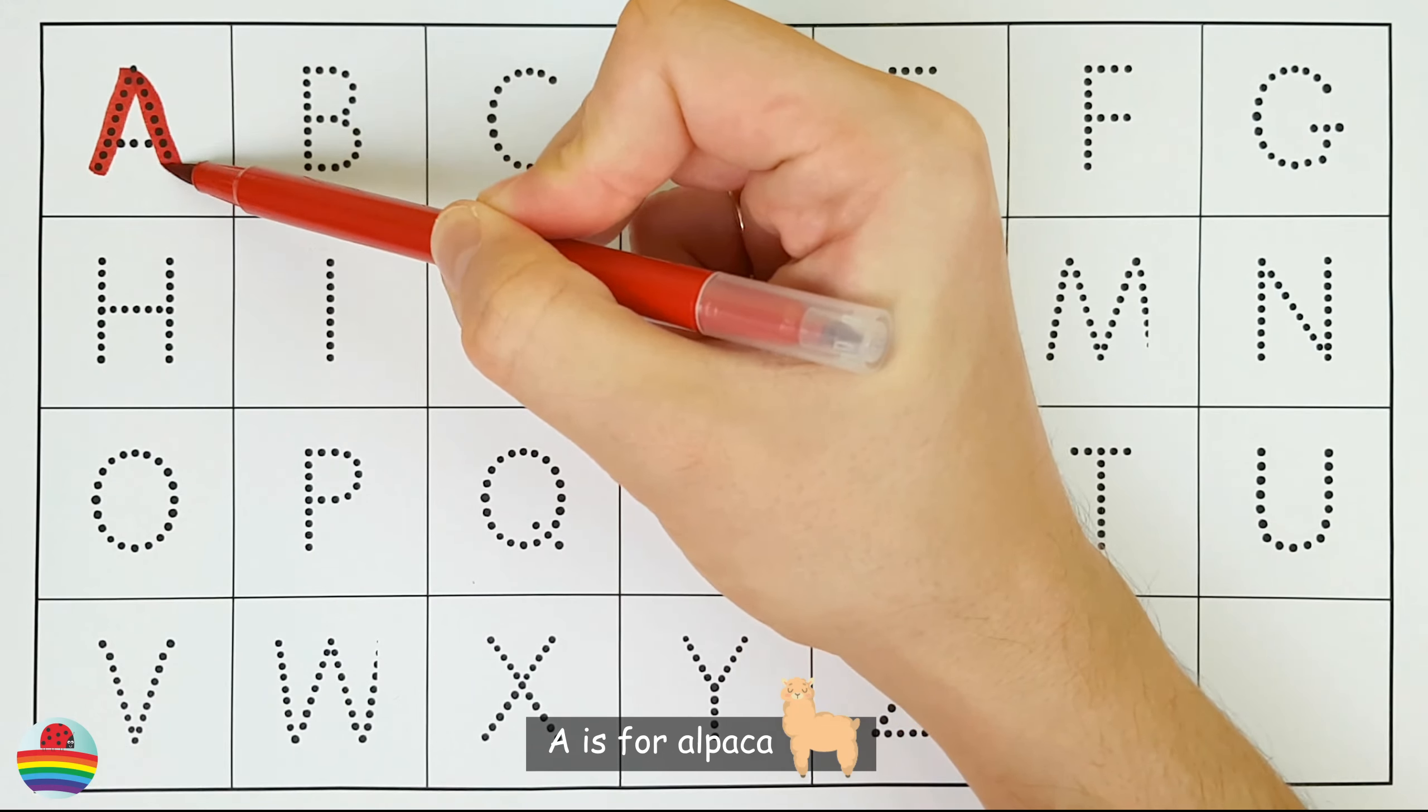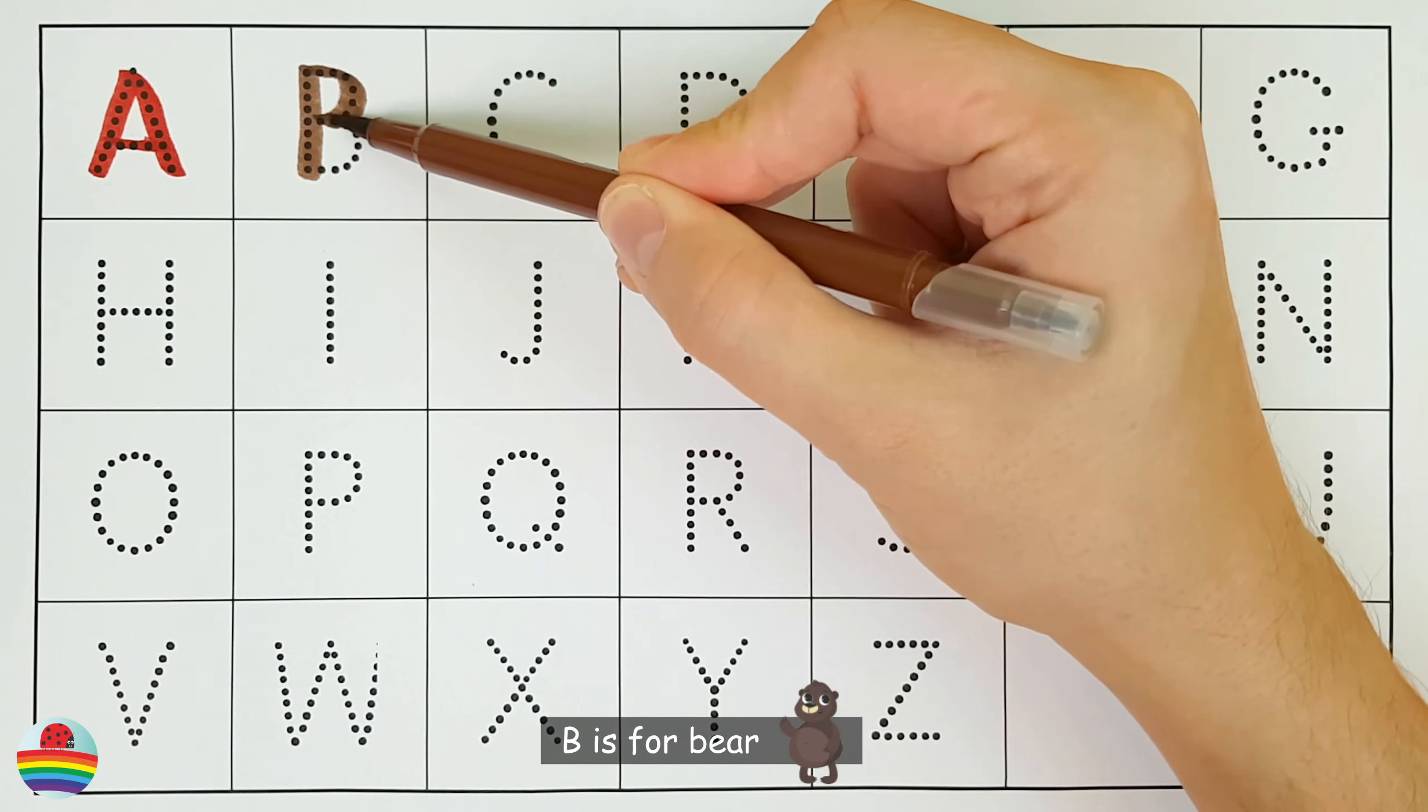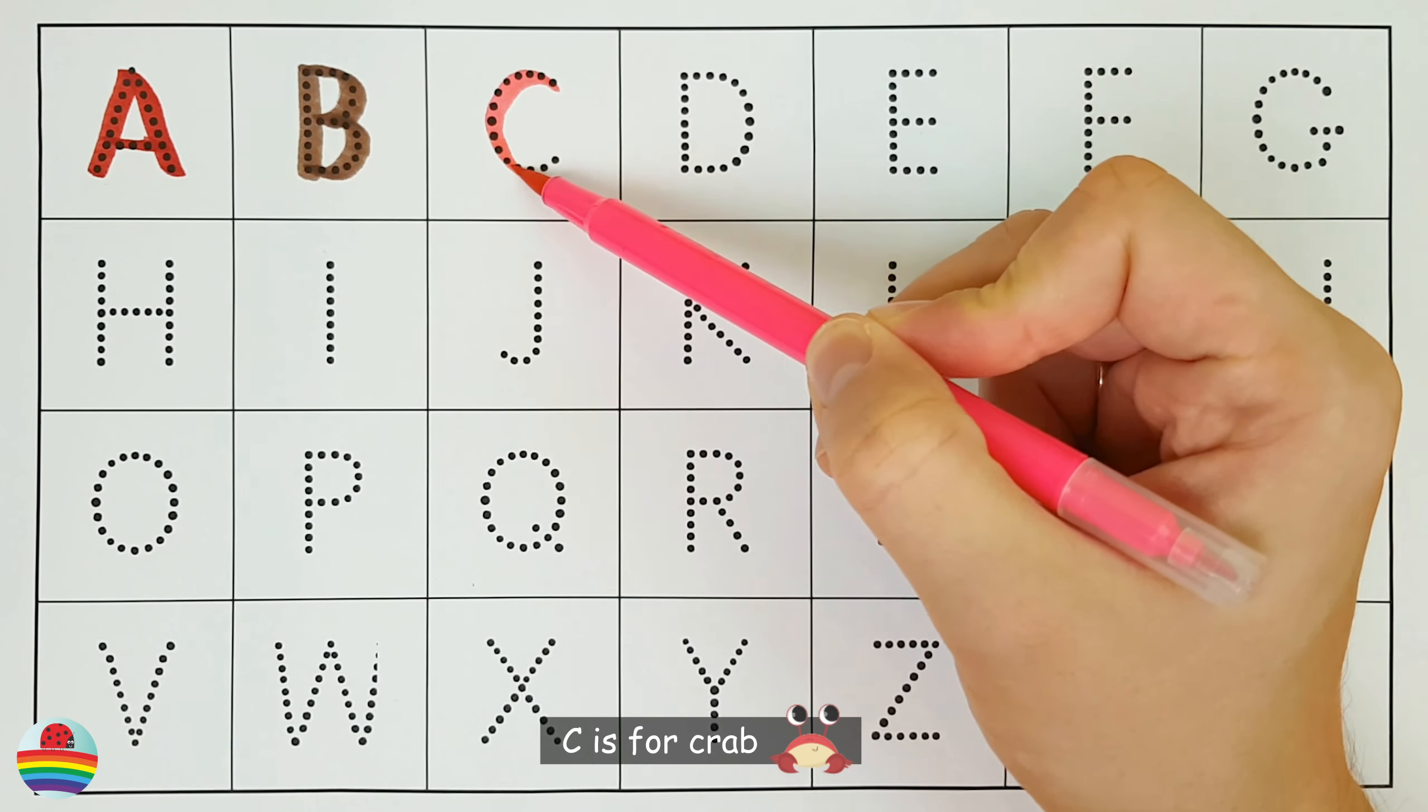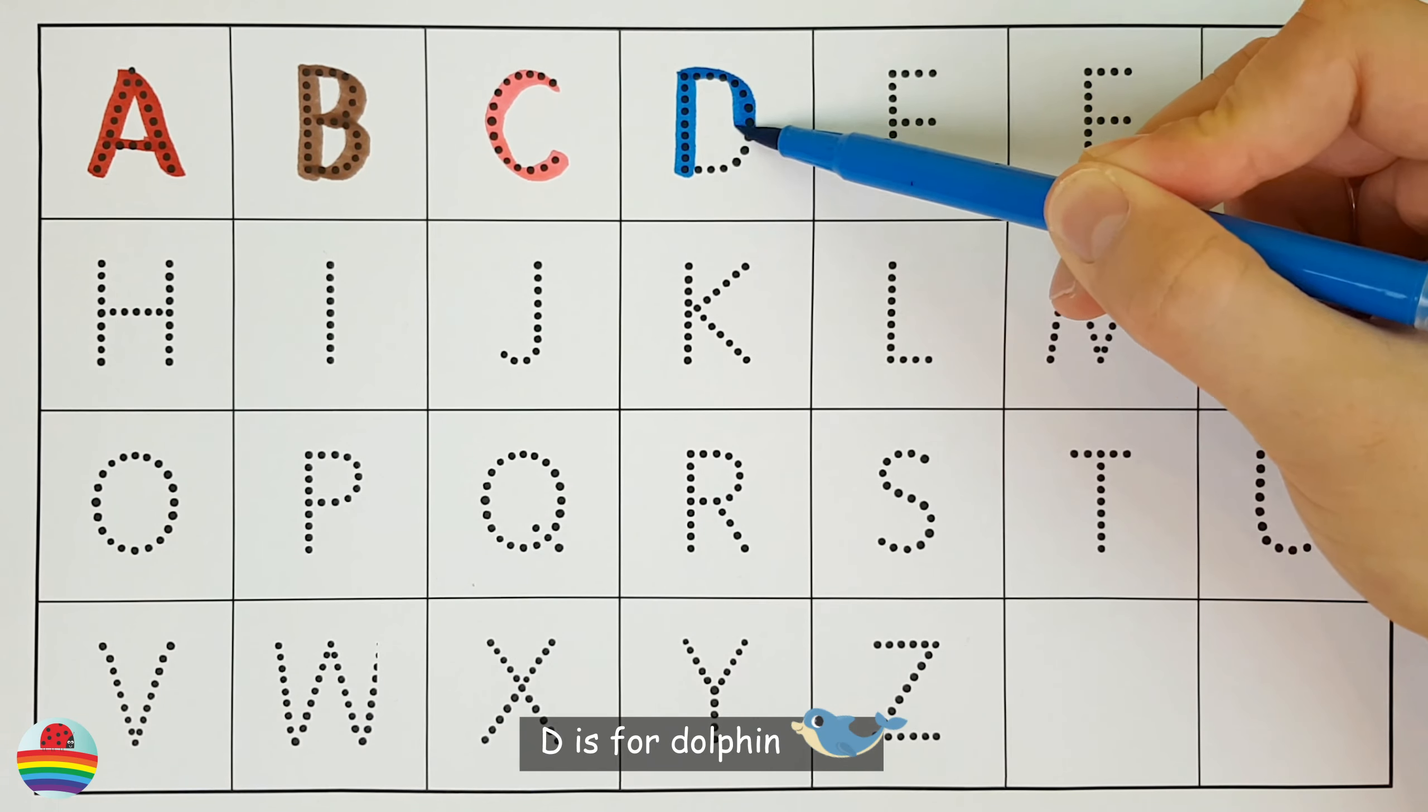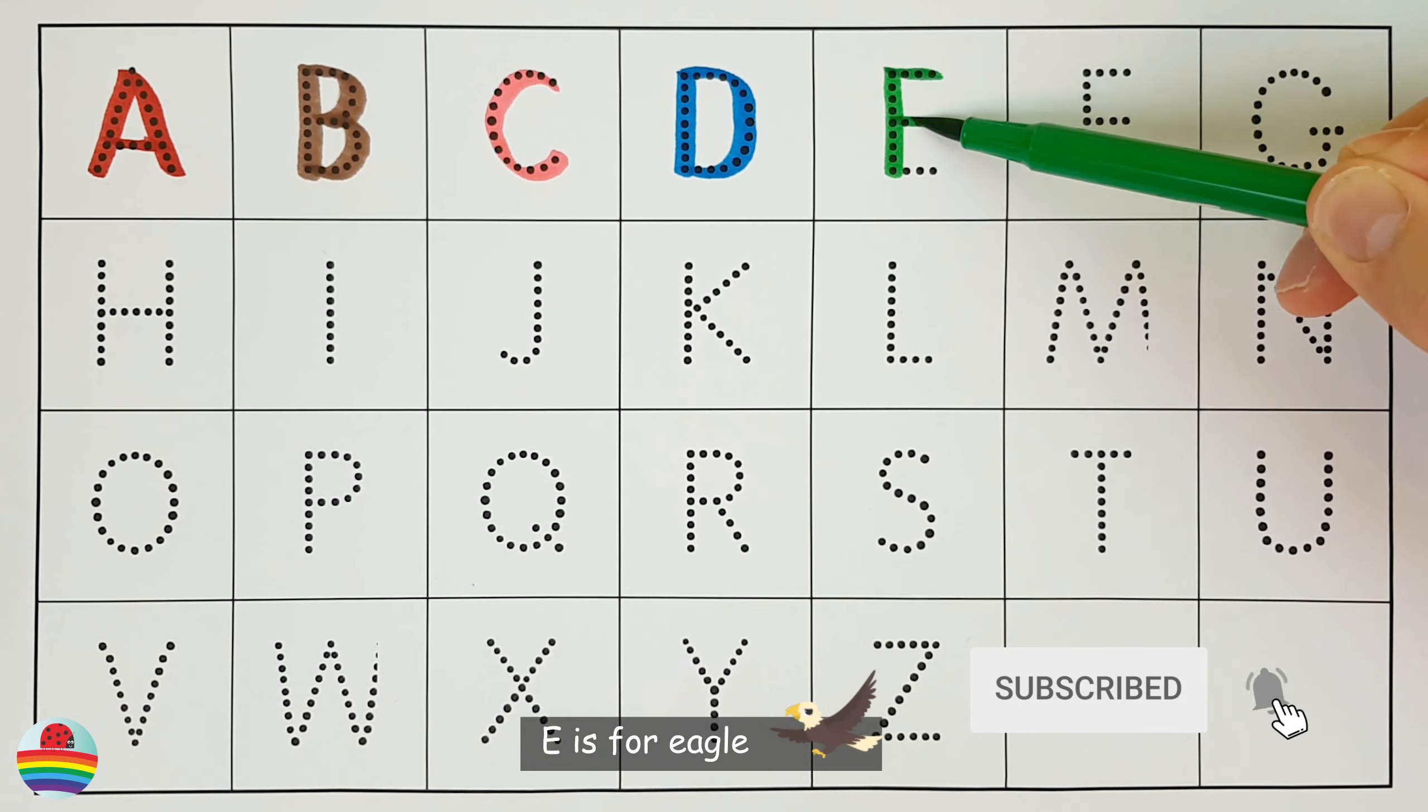A. A is for alpaca. B. B is for bear. C. C is for crab. D. D is for dolphin. E. E is for eagle.